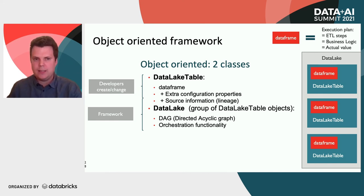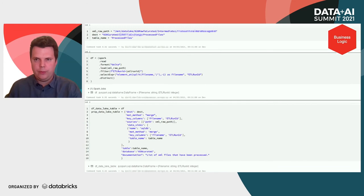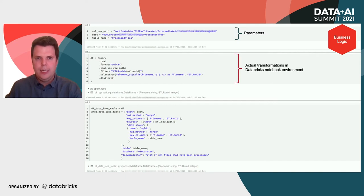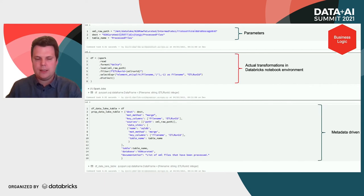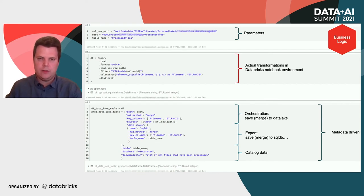Working in the Databricks online environment, we start with some parameters on the top of the notebook, then we have some transformations in the second cell — simple in this example, but more complex in real life. The whole framework is metadata-driven: we have some metadata regarding orchestration, some regarding how we want to export data, and some regarding how to catalog the data.